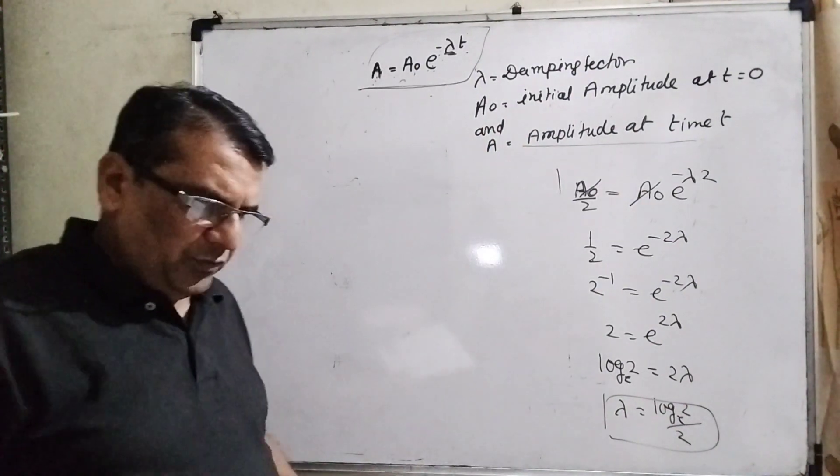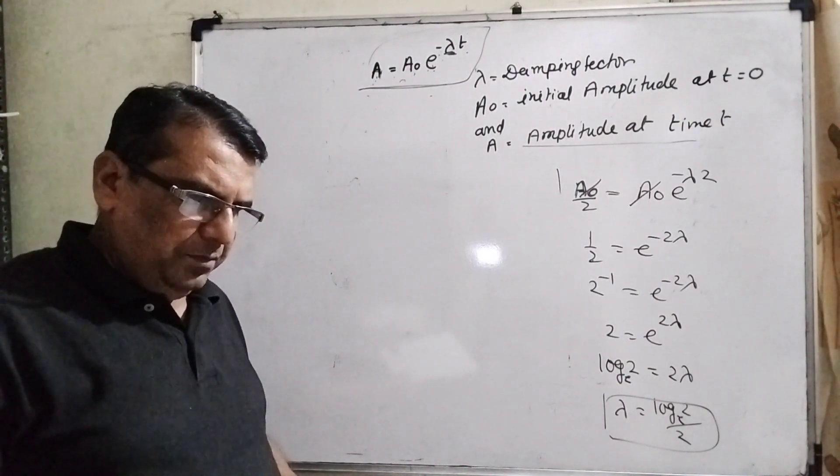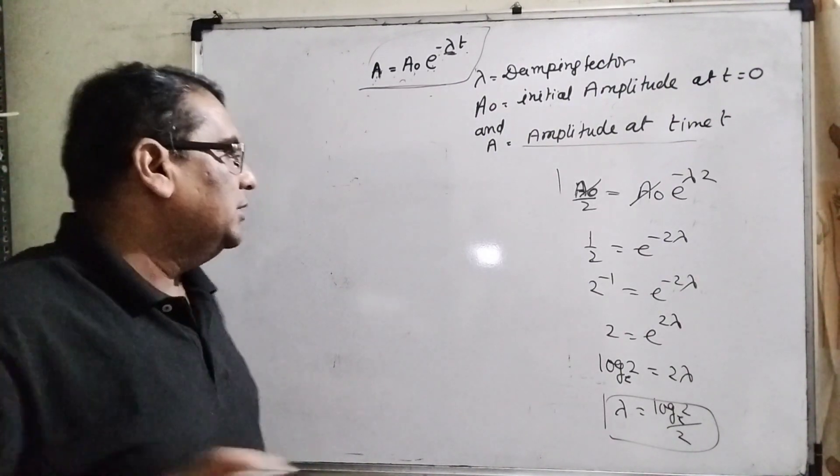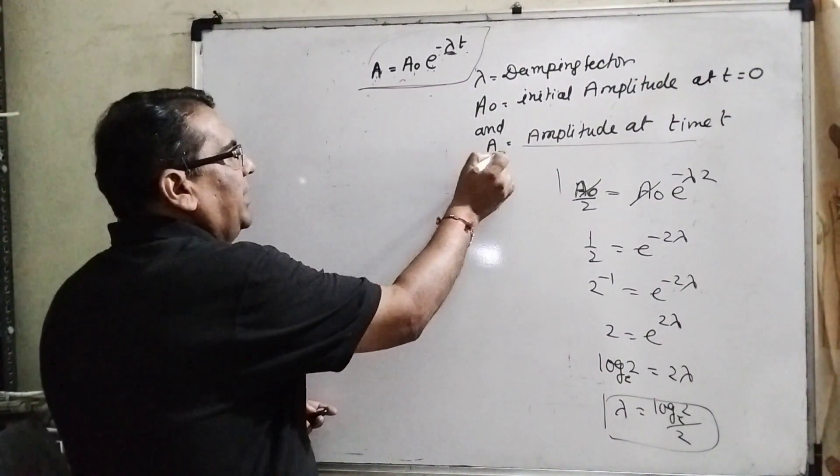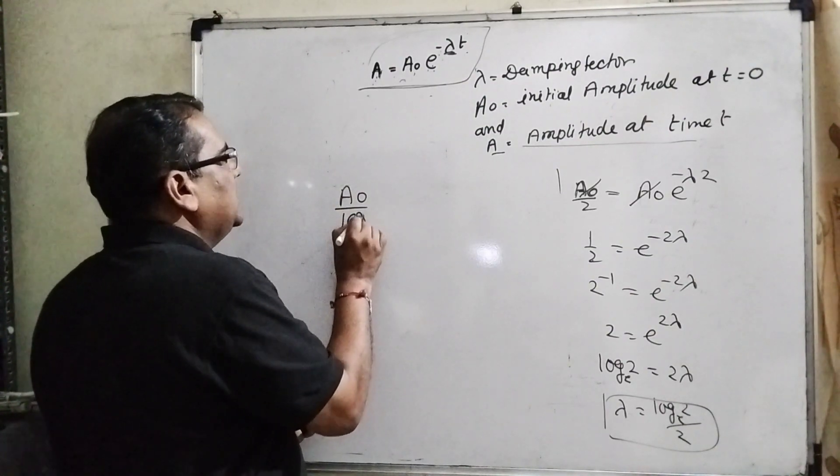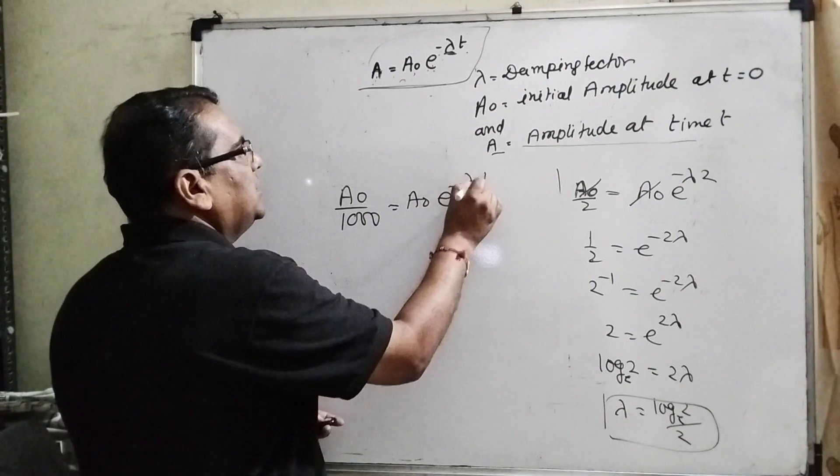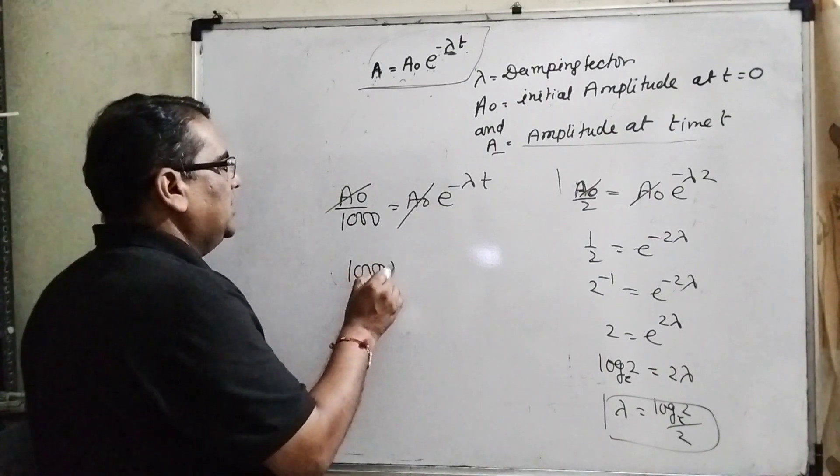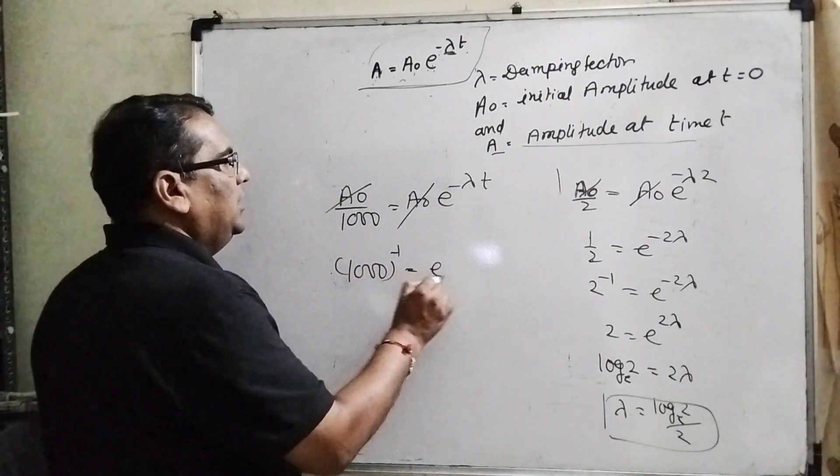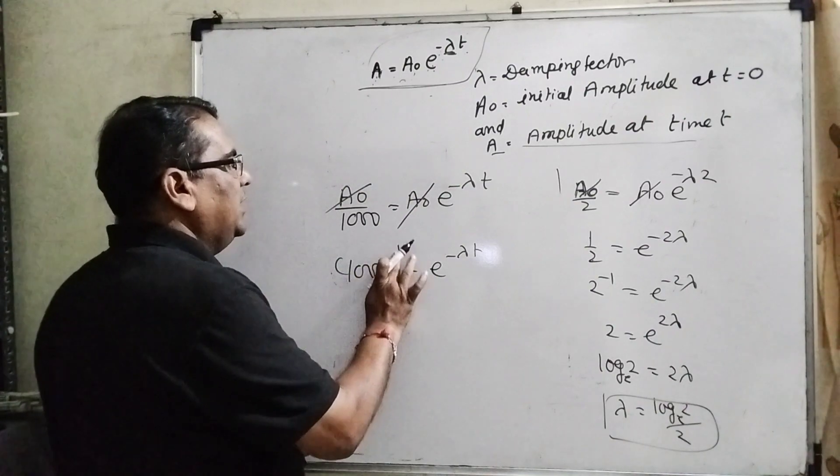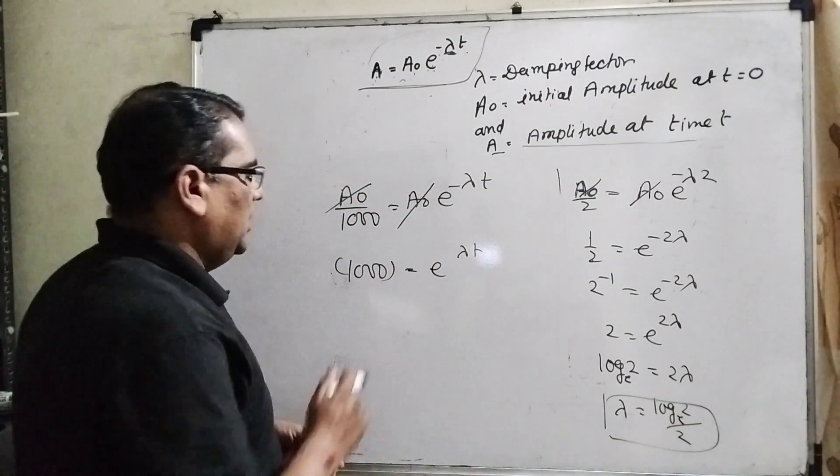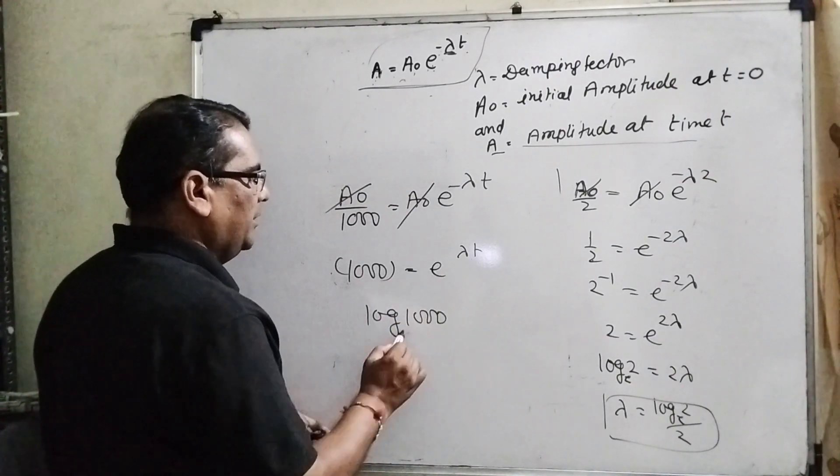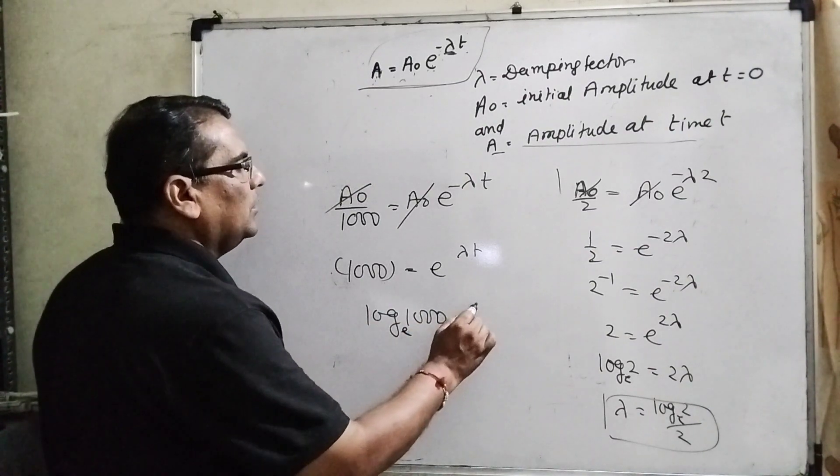Second condition: we have given the time it will take to drop to 1 by 1000 of the original amplitude. It means here amplitude, in the place of amplitude, can be written as A naught by 1000 equals A naught e raised to power minus lambda t. Here A naught, A naught cancel out. 1000 raised to power minus 1 equals e raised to power minus lambda t. Here minus minus cancel out. Now convert into log: log 1000 to the base e equals lambda t.